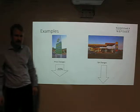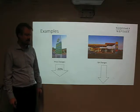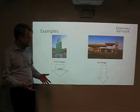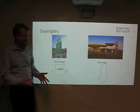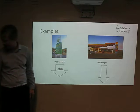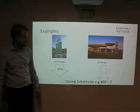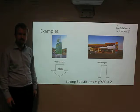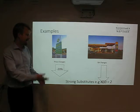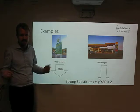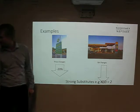That implies there's going to be a big change in the quantity demanded for Shell petrol, which implies an elastic relationship, which means a strong substitute relationship — for example, a positive XED of 2.